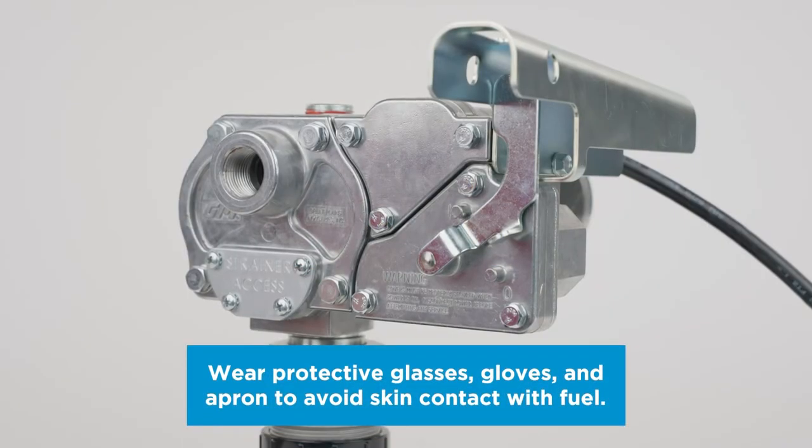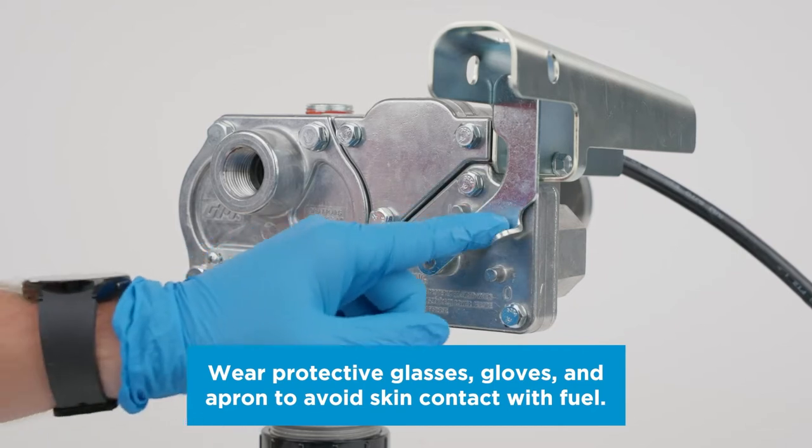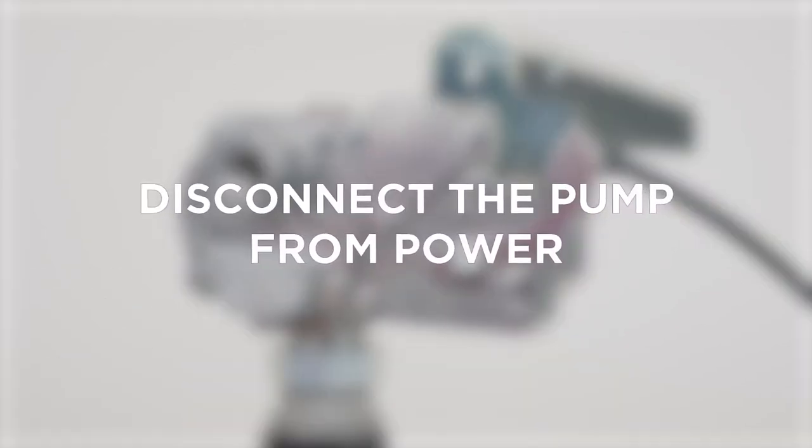To clean or replace the bypass poppet on your M150, turn the pump off and disconnect the pump from power.